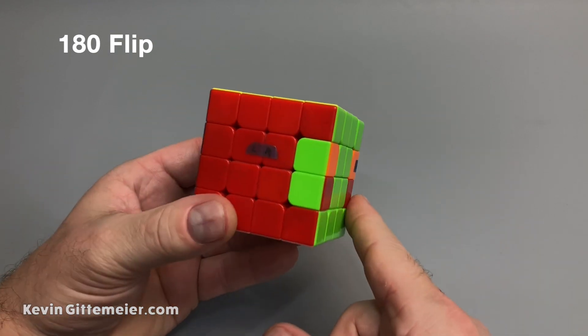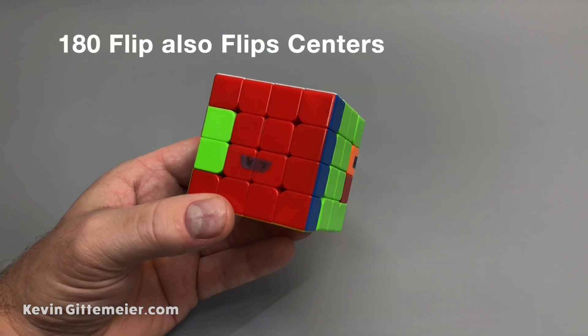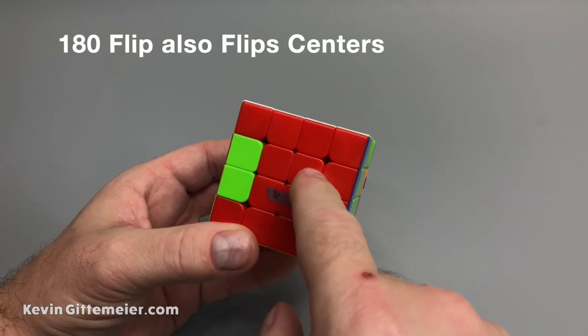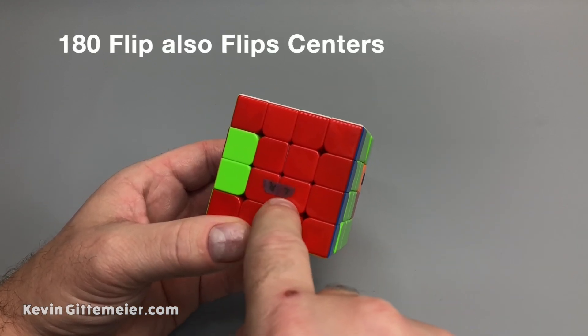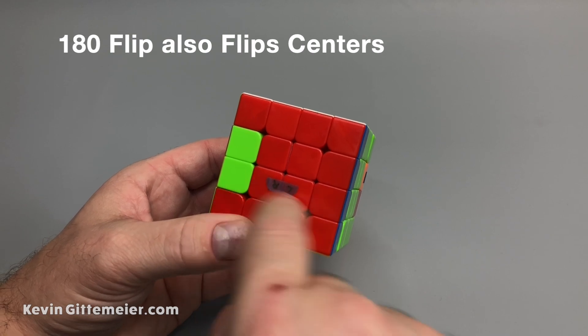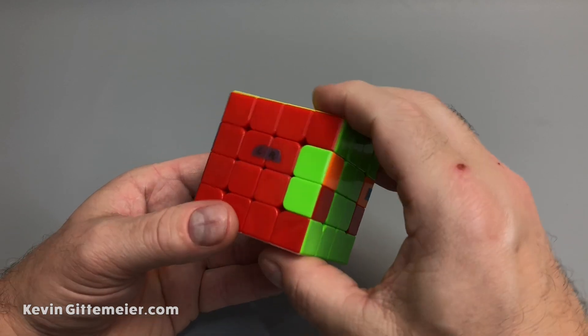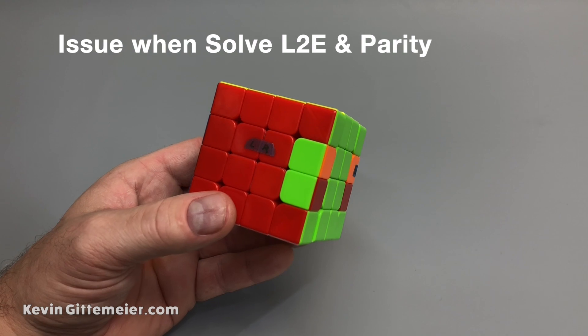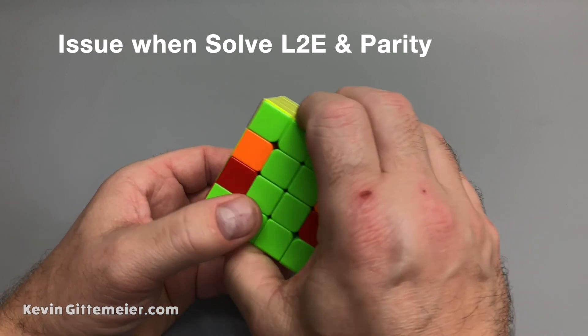So the problem with that method, though, is it also flips the centers. So although these are all red and you may not notice that it flipped it, the top is now on the bottom and left and right have swapped. So that becomes an issue when we're splitting centers and some of the other techniques that we're going to use.